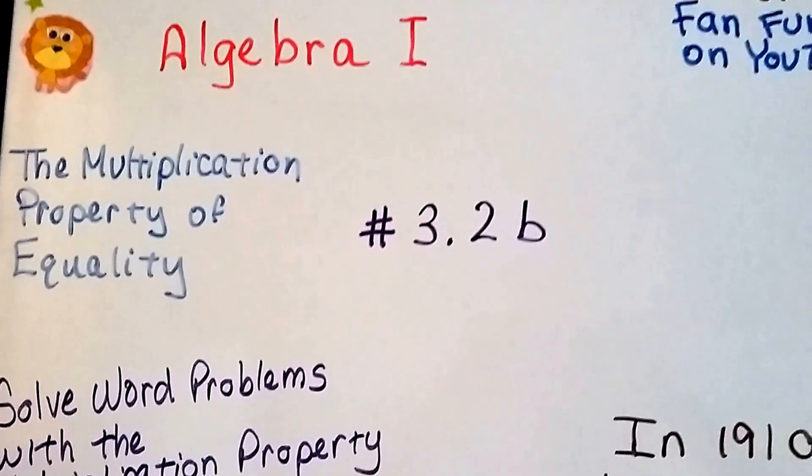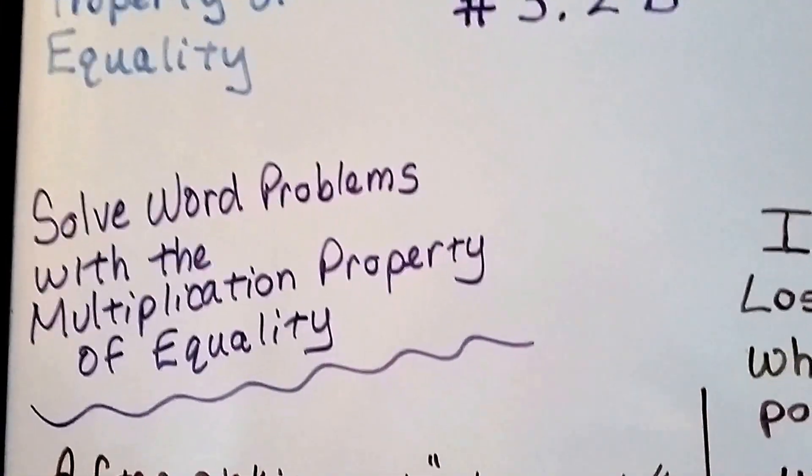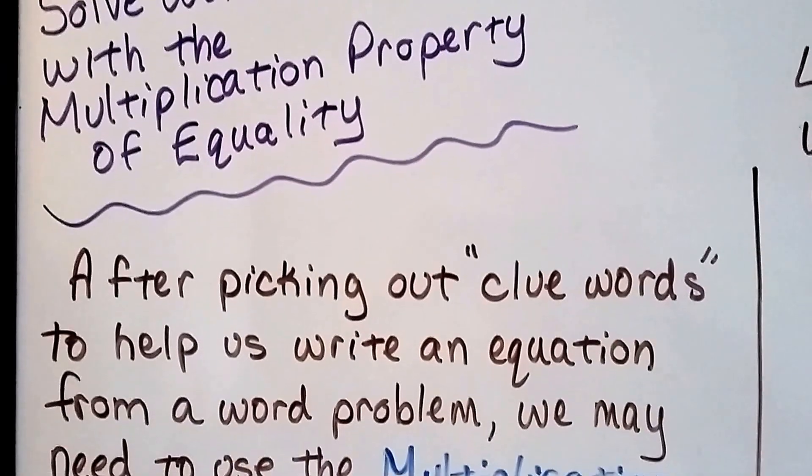Algebra 1, number 3.2b. We're still talking about the multiplication properties of equality, and we're going to show you how to solve word problems with the multiplication property of equality.